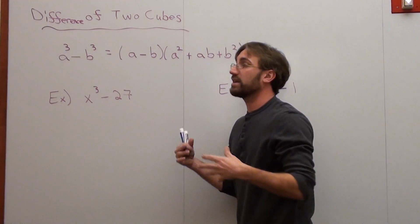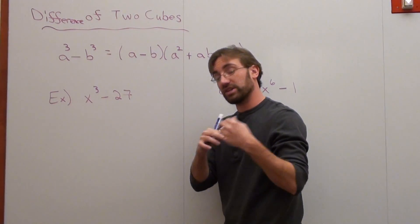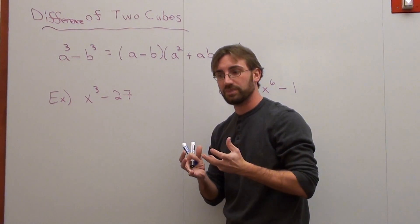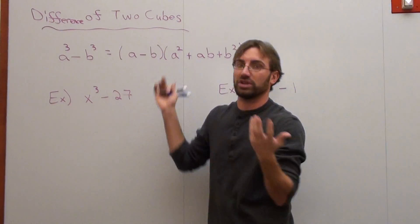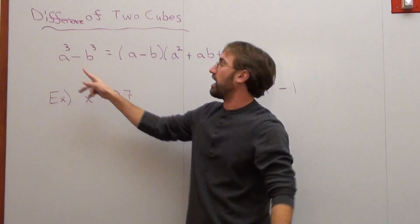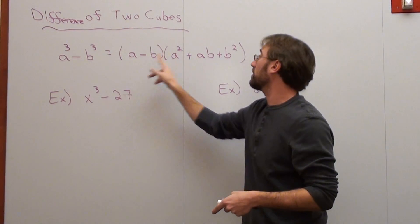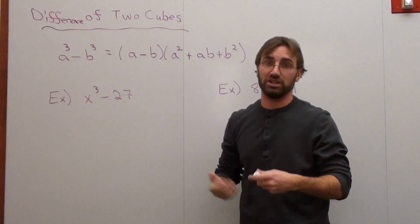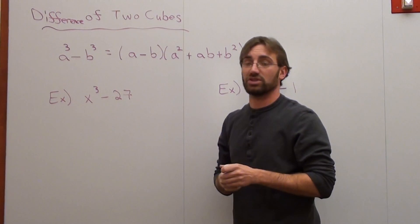Hello again. It's almost the exact same lesson as the sum of factoring the sum of two perfect cubes, except now we're doing the difference of factoring two perfect cubes. So I changed my addition to a subtraction, which changes this addition to a subtraction, but it changes this subtraction to an addition, and that's the only real difference in the formula.